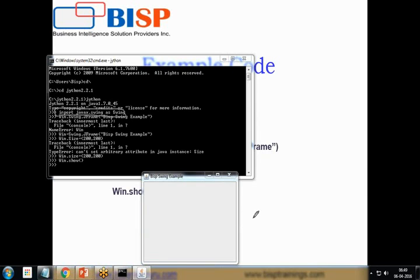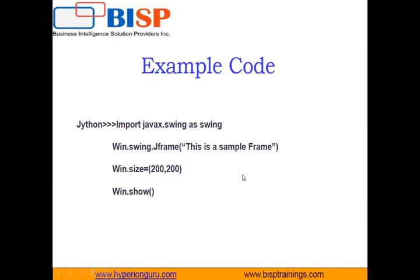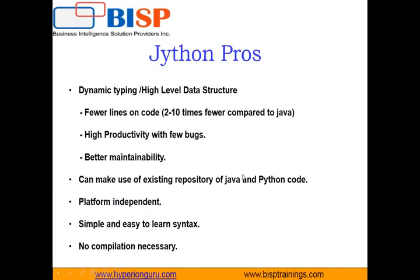This is very important: 'import javax.swing as swing' — what we are doing is importing the javax.swing functionality directly into our Python program, into our Jython code. Now let's talk about Jython's pros and cons. The benefits include dynamic typing, high-level data structures, fewer lines of code — two to ten times fewer compared to Java — and high productivity with very few bugs.